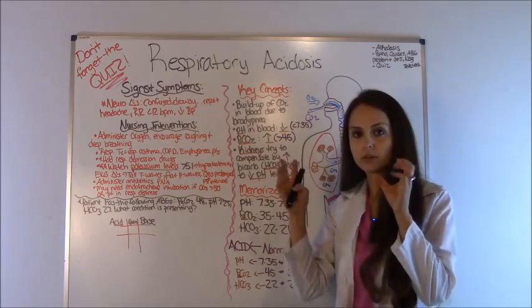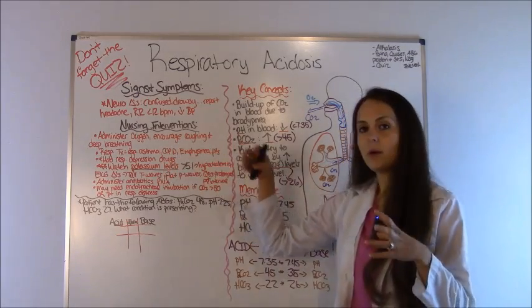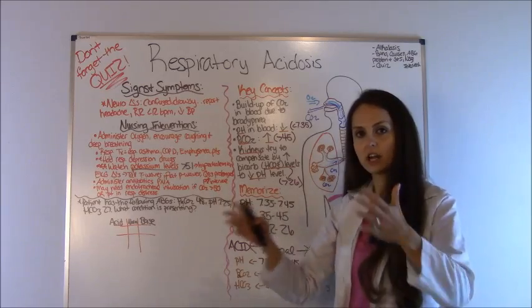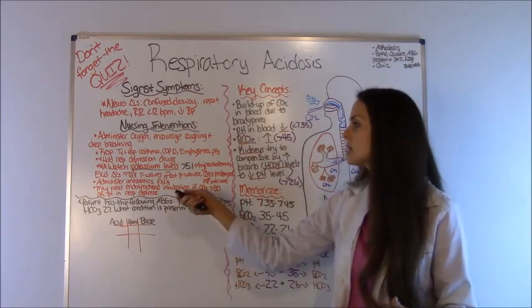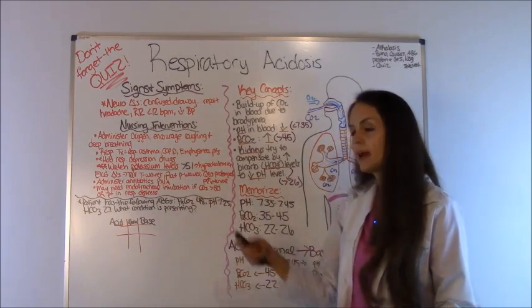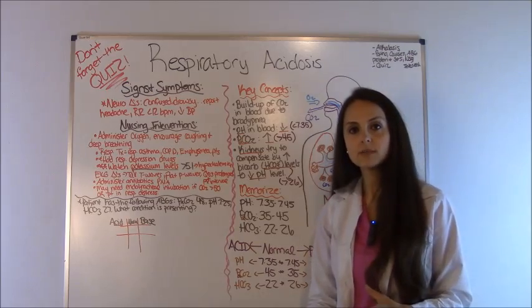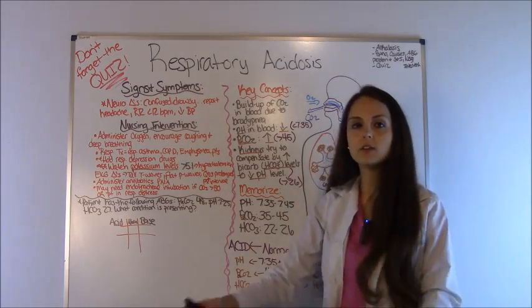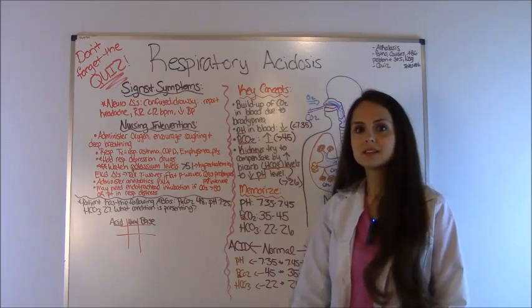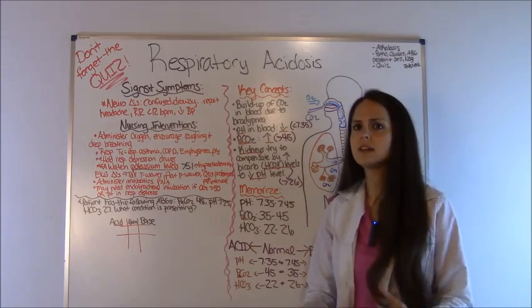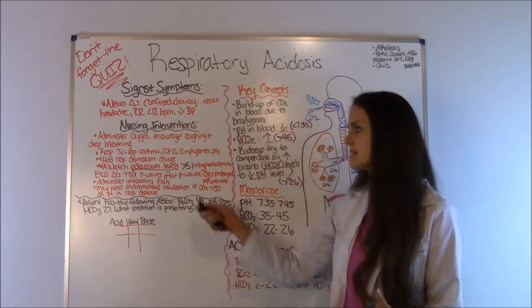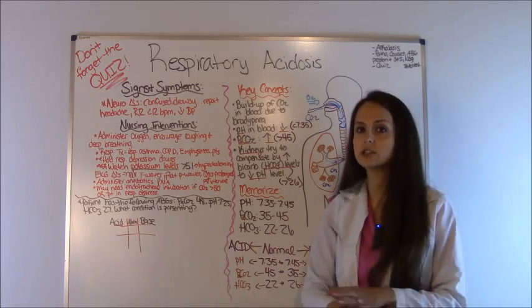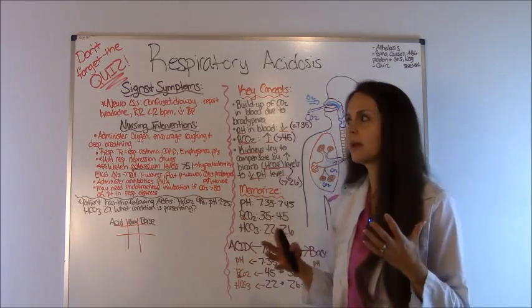In asthma, you have bronchoconstriction, and that'll help open them up so they can breathe properly and have that gas exchange go so they can expel that carbon dioxide. Also, if your patient is in this, a lot of times narcotics will cause this. Morphine, fentanyl, even Lortabs, anything that's an opiate or a sedative like Valium, things like that can cause respiratory depression. So you'll want to hold those medications. Don't want to give those because it will make it worse.